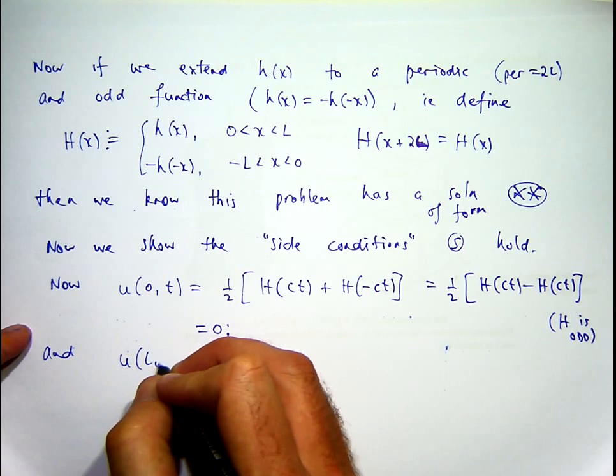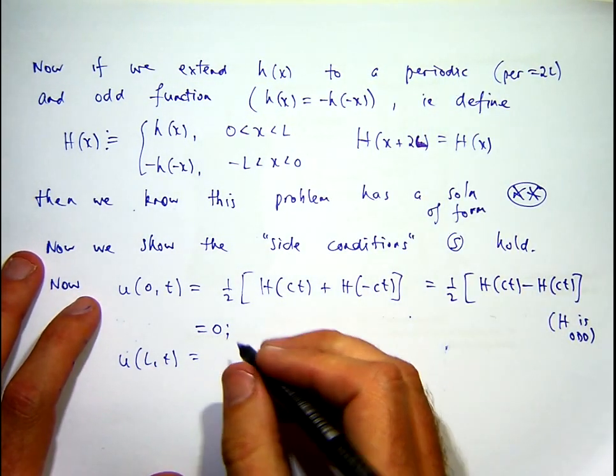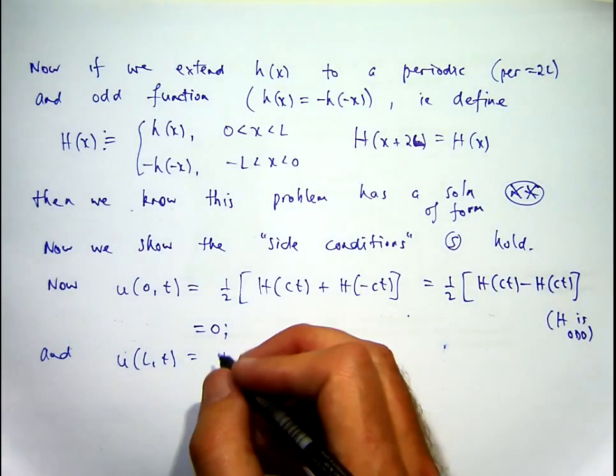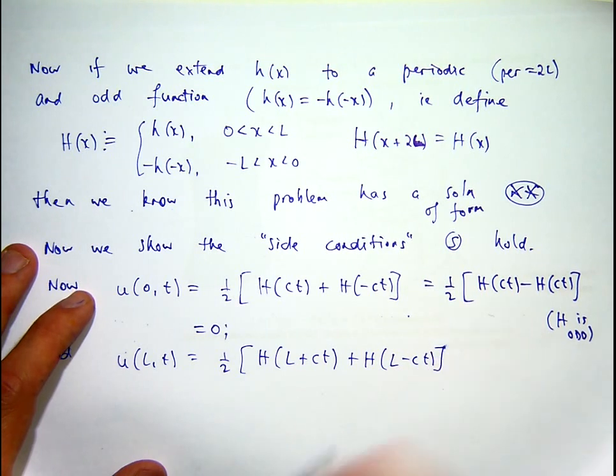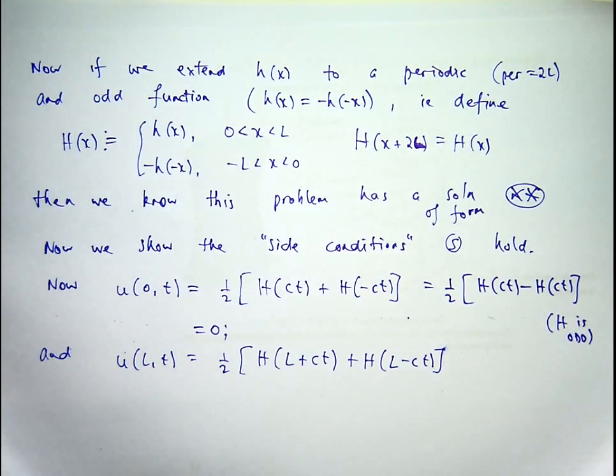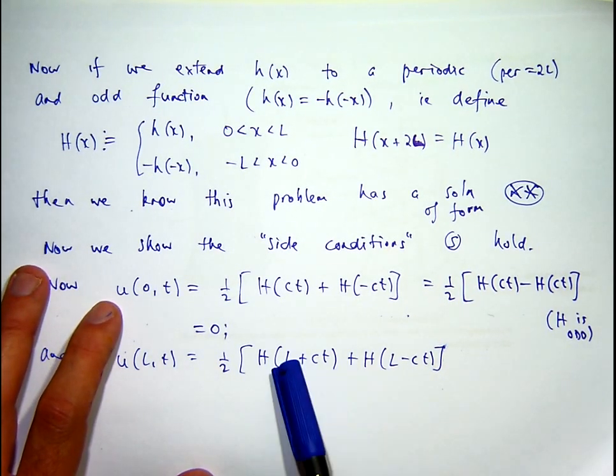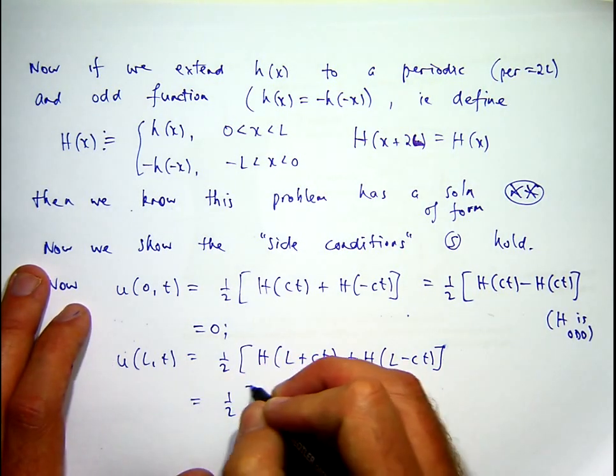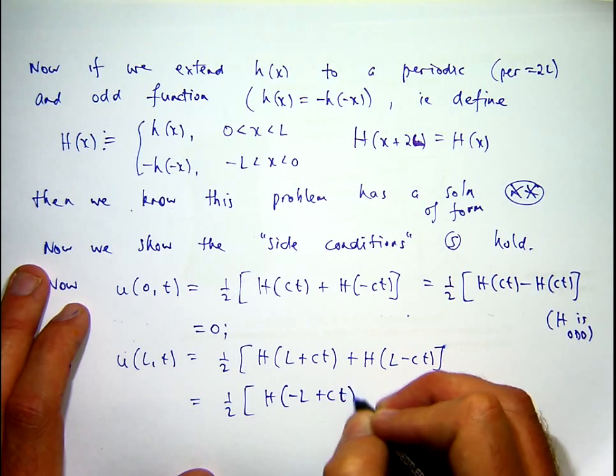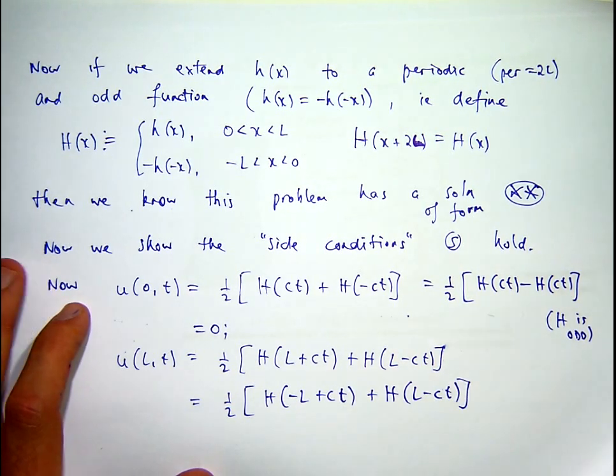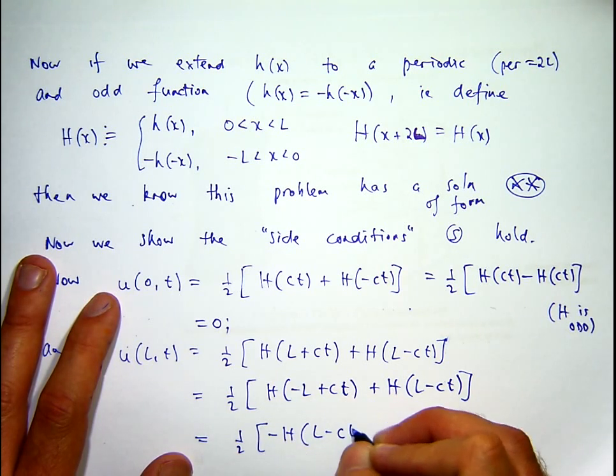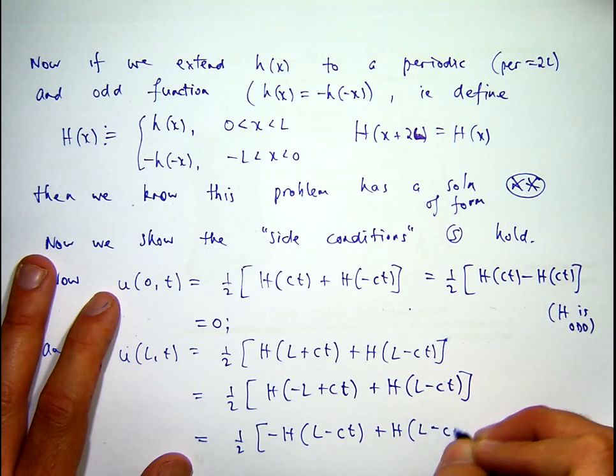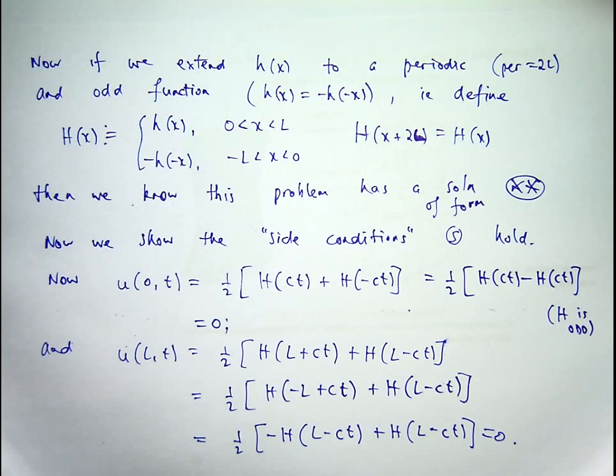What about the other side condition? Well we've used the oddness, we haven't used the periodicity yet. So if I go back to double star and plug in x equals capital L, I'll get something like this. Now we want these two things to cancel each other out in some sense. So how do we do that? Well H is 2π periodic, big H. So certainly this is true and this is the negative of that. So if I use the oddness, I get the following. So our other side condition is satisfied.